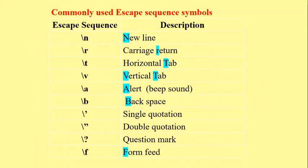Now let's look at some commonly used symbols in escape sequences. Backslash n stands for new line. Backslash r stands for carriage return — that means when you press the Return key. There is a slight difference between \n and \r. Backslash t stands for horizontal tab.